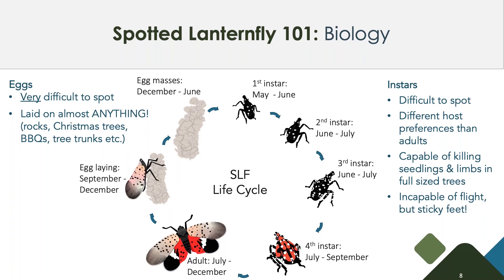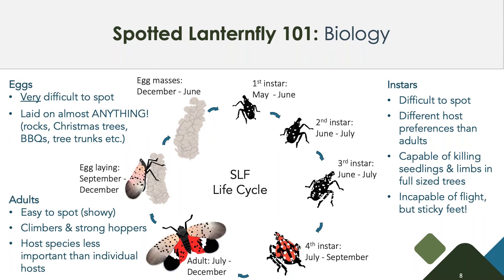Not only do Spotted Lanternfly feed on 70 types of hosts, but the nymphs or instars have different host preferences than the adults, making them even more difficult to detect because preferences change throughout an individual's life. These little guys will also feed by the thousands and are capable of killing seedlings, limbs, and full-sized trees. They're incapable of flight but have really sticky feet, and they are also a vector as a result — they might get on your clothes and travel somewhere else. Adults are really easy to spot — big insect, about an inch long, really showy. These guys are climbers, really strong hoppers, and they also can fly, with really strong back legs capable of launching themselves a good distance.